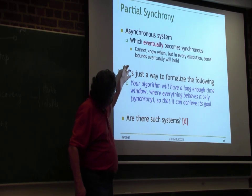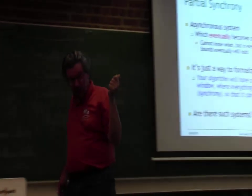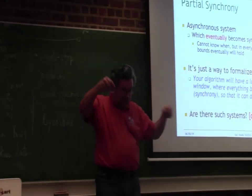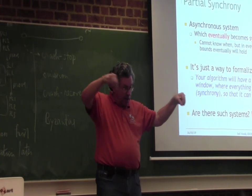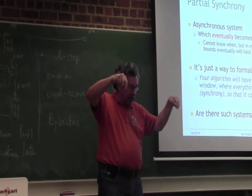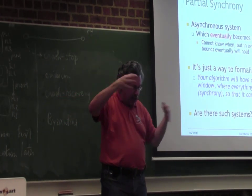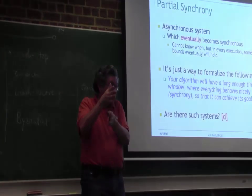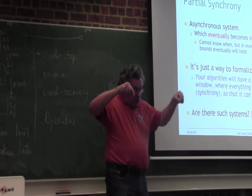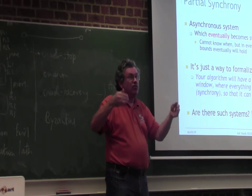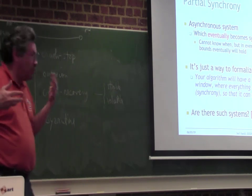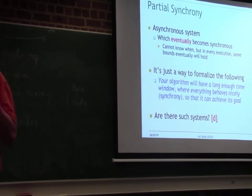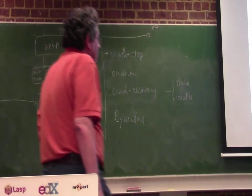It turns out the internet can be modeled pretty well as partially synchronous. Because in practice there are bounds, but sometimes you don't know them. For example, if I'm sending messages between two nodes on the internet, maybe there's congestion, so maybe it takes 10 milliseconds but sometimes 100 milliseconds. In the beginning it's messy, but as soon as you realize that 100 milliseconds is more like the bound, you eventually realize there is a bound. Partially synchronous is a much more realistic way of modeling the internet.